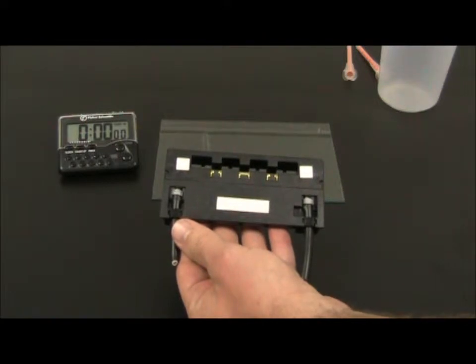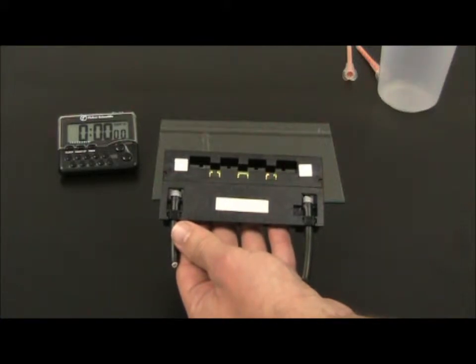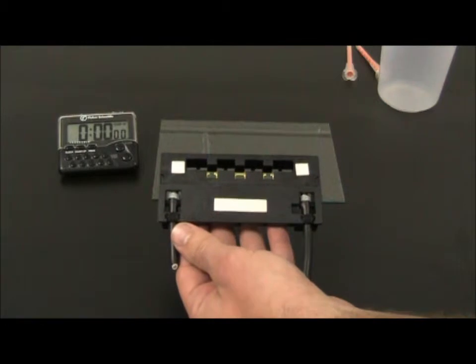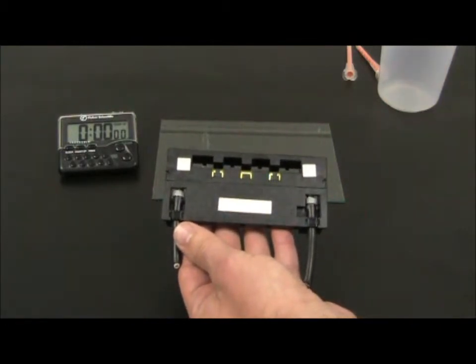So what we're going to do is dispense some of the Shinitsu KE45 which is a one-part RTV sealant to the junction box and then place it on this glass sheet. Usually the junction box will be bonded to a PVF film or FPE film but for the sake of demonstration here we're going to use the glass substrate.